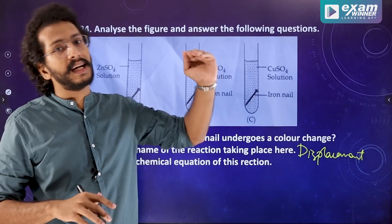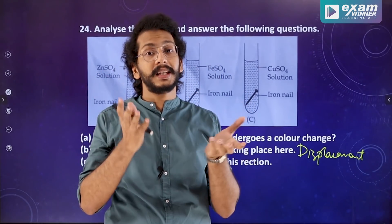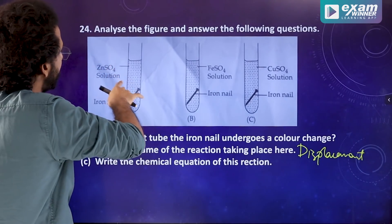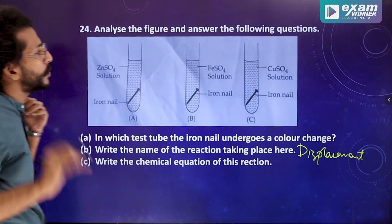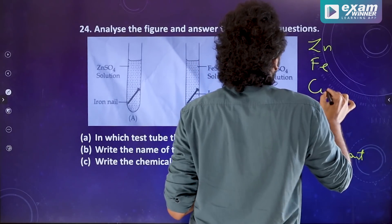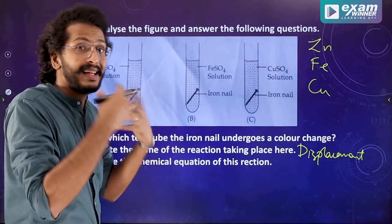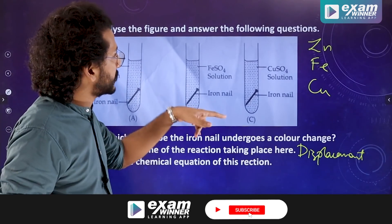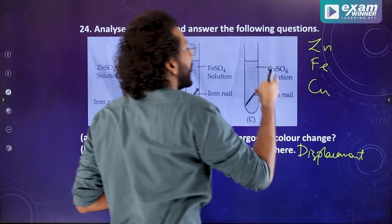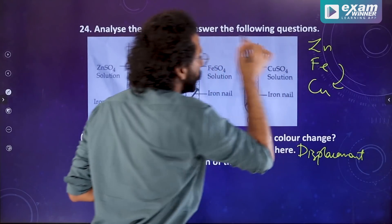In the reactivity series, zinc is above iron, and iron is above copper. The iron nail is placed in copper sulfate solution — since iron is more reactive than copper, it displaces copper. The chemical equation is: Fe plus CuSO4 gives Cu plus FeSO4.